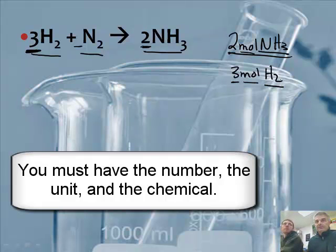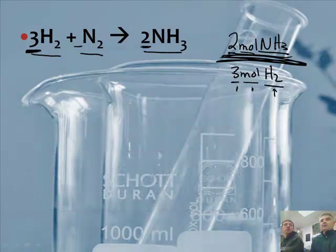You must have the number, you must have the unit, moles, you must have the chemical - hydrogen, ammonia, whatever it might be. So this is one fraction. Can we think of any more here? Yeah, sure. About six of them, I think. There are six.